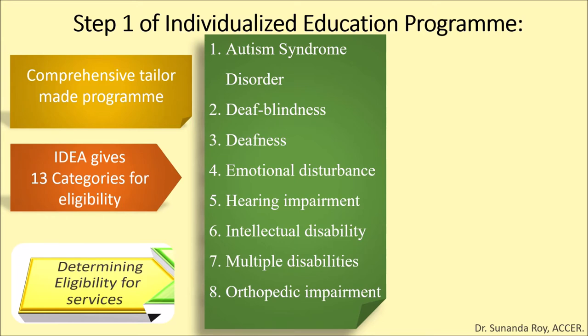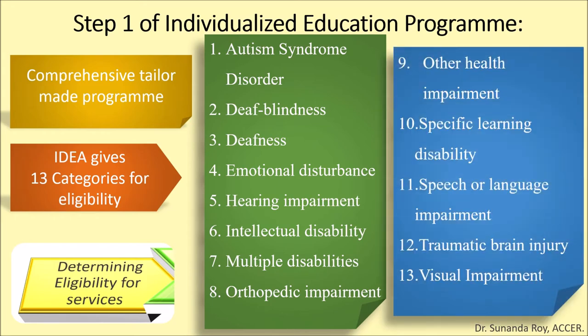Additional categories include Intellectual Disability, Multiple Disabilities, Orthopedic Impairment, Other Health Impairment, Specific Learning Disability, Speech or Language Impairment, Traumatic Brain Injury, and Visual Impairment. The next question is how to get a child evaluated for eligibility. Parents interested in getting an IEP prepared for their wards can contact the child's teacher, school psychologist, or principal.